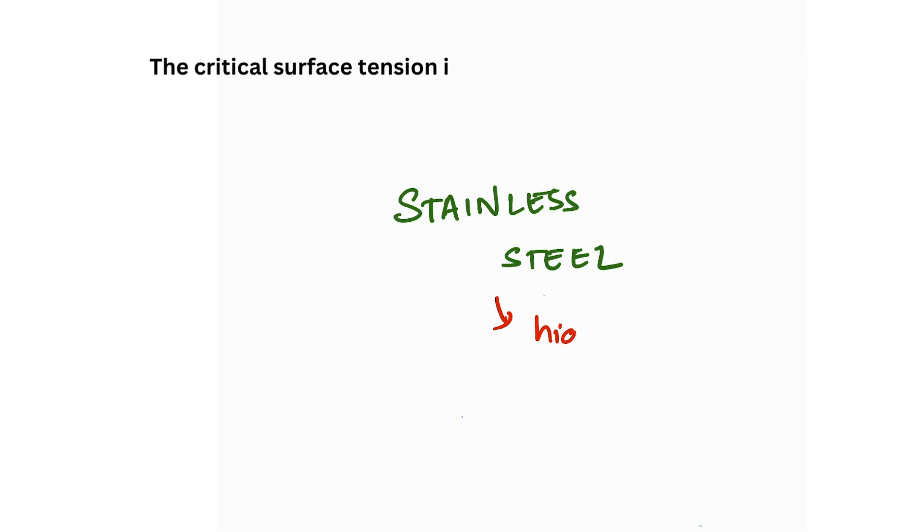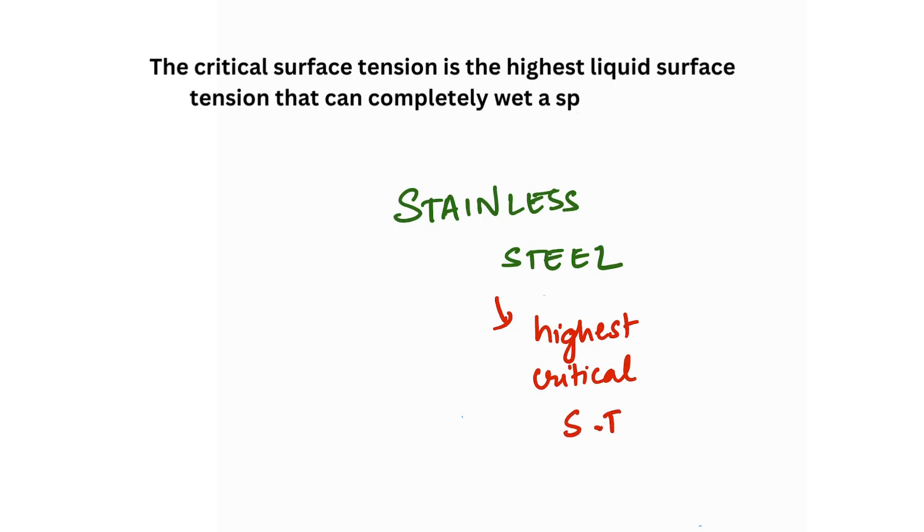Highest critical surface tension means it is the maximum surface tension of a liquid that will form zero contact angle on a solid surface. This means that stainless steel will retain plaque.